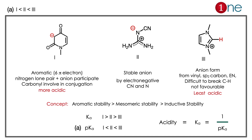The second compound will be in the middle because it will only be stabilized by the inductive effect of cyanide. So if you look at the acidity order, one will be most acidic, then second, and third will be least. pKa will be the inverse of that. So one will have the lowest pKa and third will have the highest pKa. The concept you have to learn here is: aromatic stability is higher than mesomeric stability, then inductive stability.